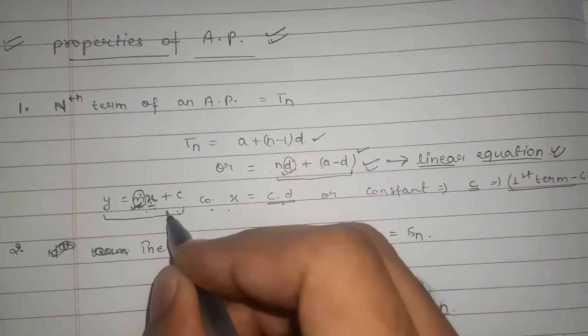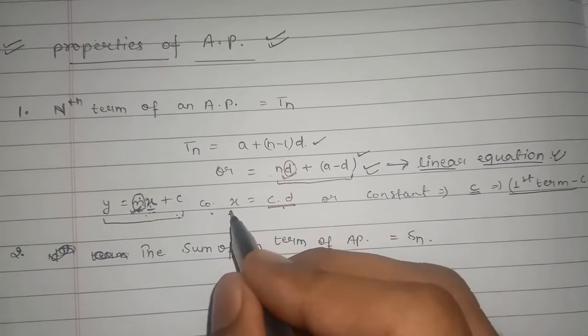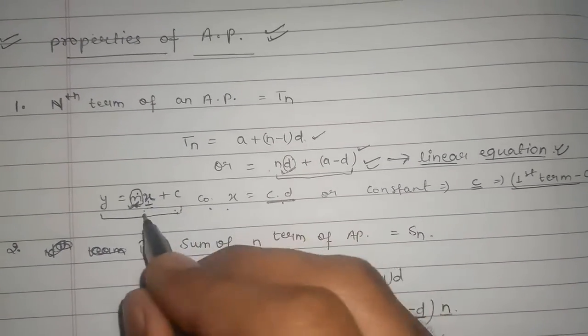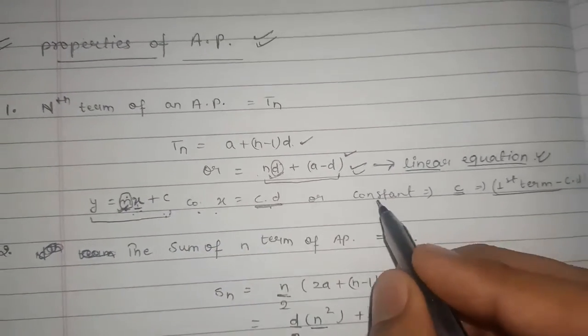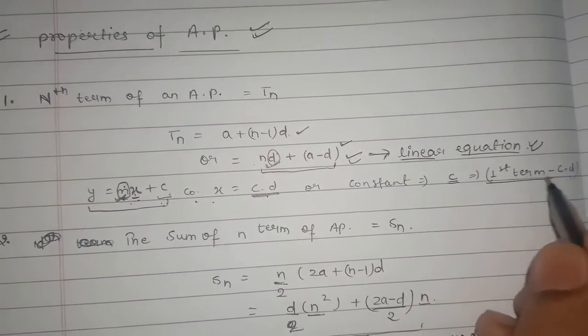It is a form of equation in x. So by comparing we get that coefficient of x is m, that is common difference, and constant term here is constant term c, or c is first term minus common difference.